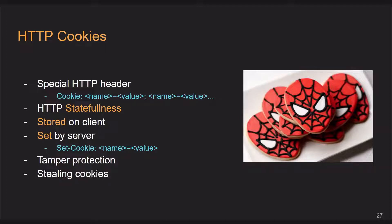HTTP cookies are a very special thing that needs to be paid attention to. It's a special HTTP header called 'cookie,' and oftentimes there will be multiple included. It uses a name-equals-value syntax, and you can list them separated by semicolons. They provide statefulness to HTTP — this is a way to link multiple requests together. These are stored on the client in their browser and are set by the server via the 'Set-Cookie' header. A lot of web server software like gin router for Golang and flask for Python can handle cookie setting easily and provide easy interfaces, so you don't really need to worry about the low-level stuff.